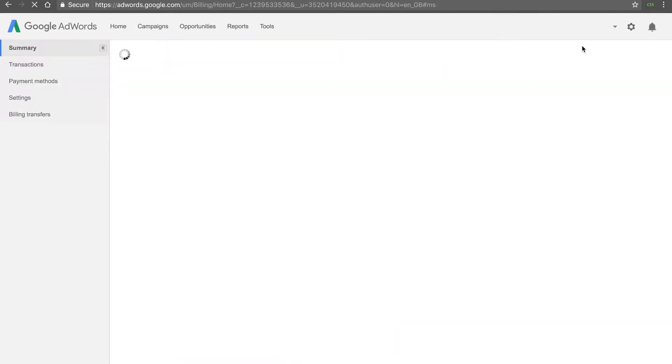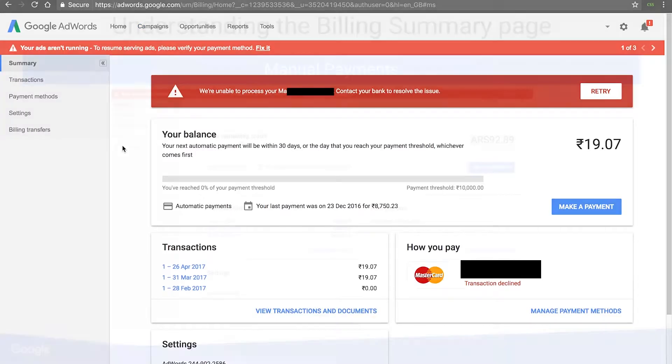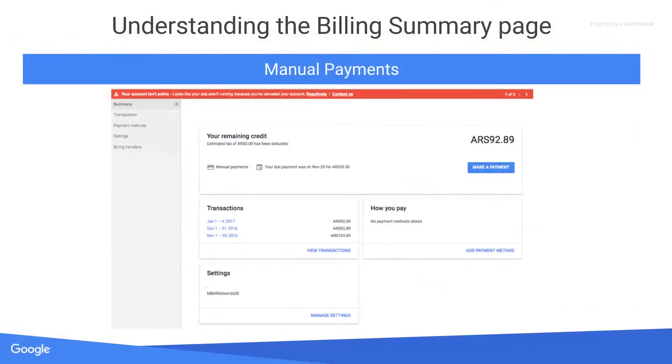If you're using manual payments, your billing summary would give you details about your remaining credit, your recent transactions, your payment methods, and your settings.